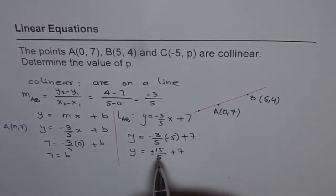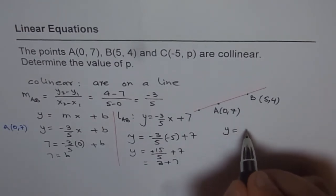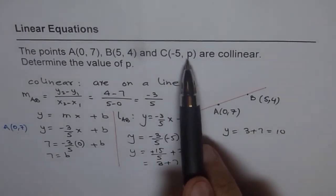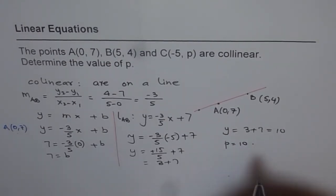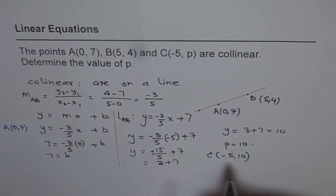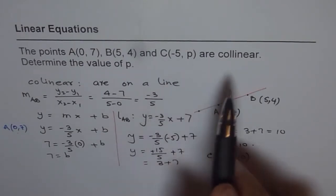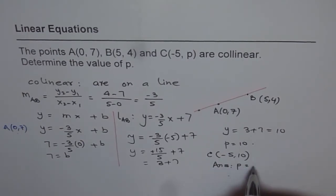Now, that gives me 3. 15 divided by 5 is 3. So, we get y equals 3 plus 7. So, we can write y equals 3 plus 7, which equals 10. So, for x equals -5, we get p value as 10. So, we get p equals 10. So, point C should be (-5, 10). So, that is our answer. If point C is at (-5, 10) or if p equals 10, then C is collinear to A and B. So, the answer is that p equals 10.